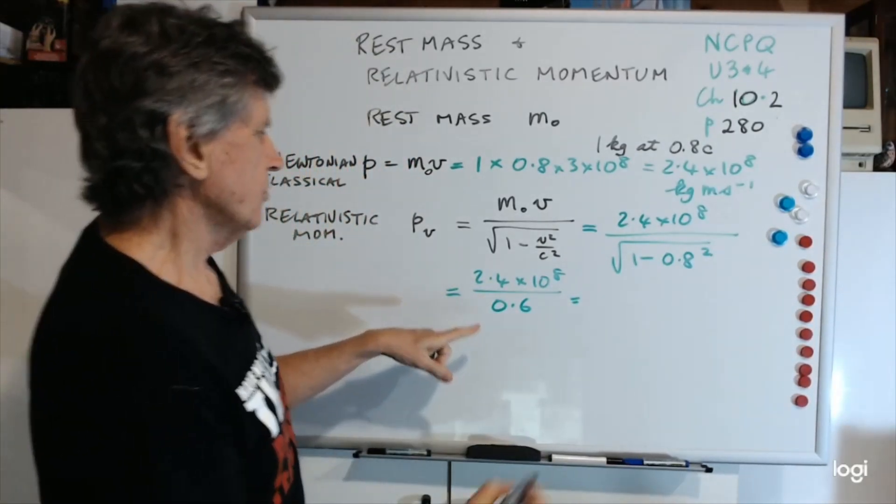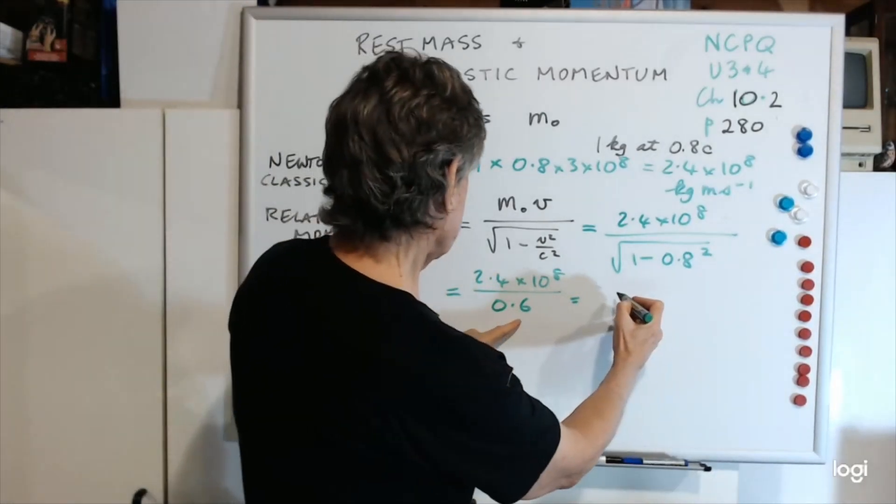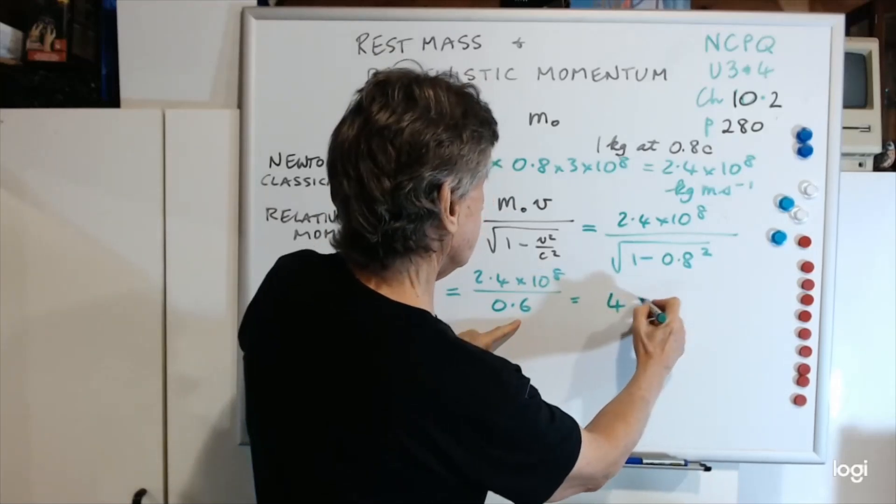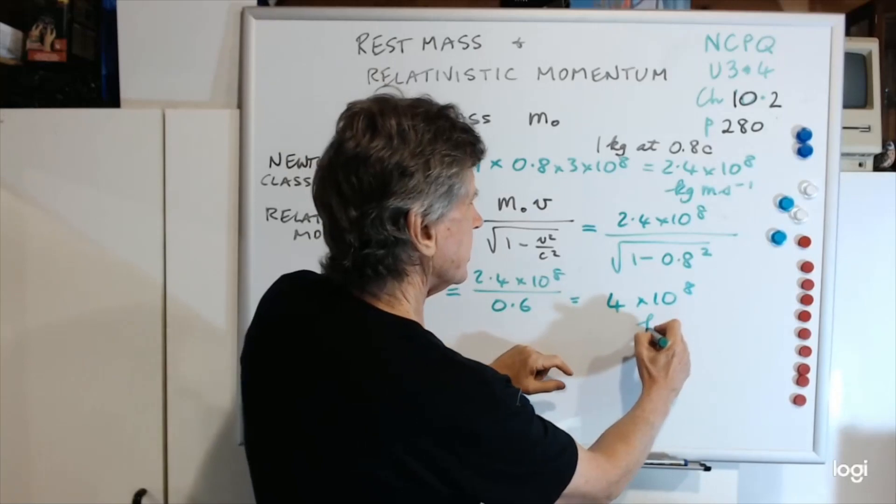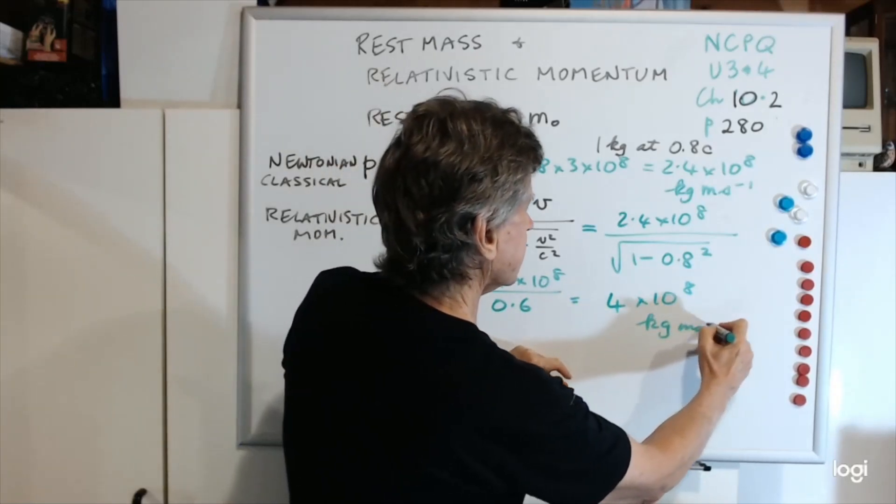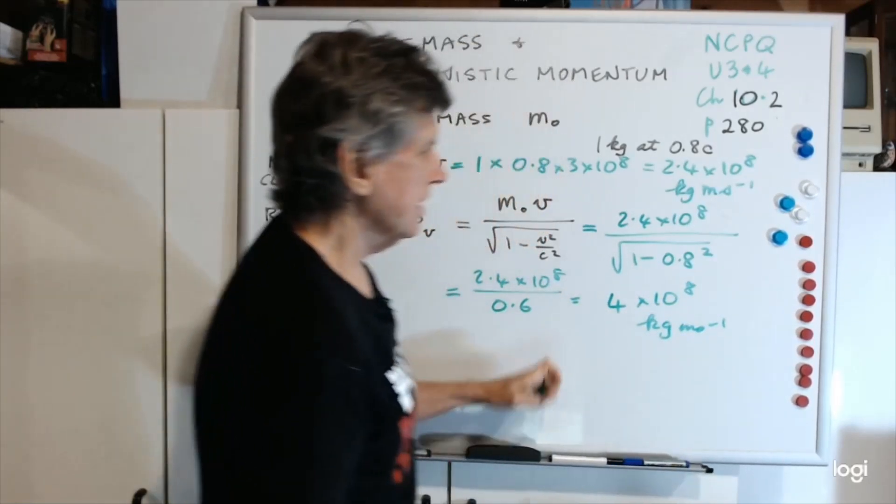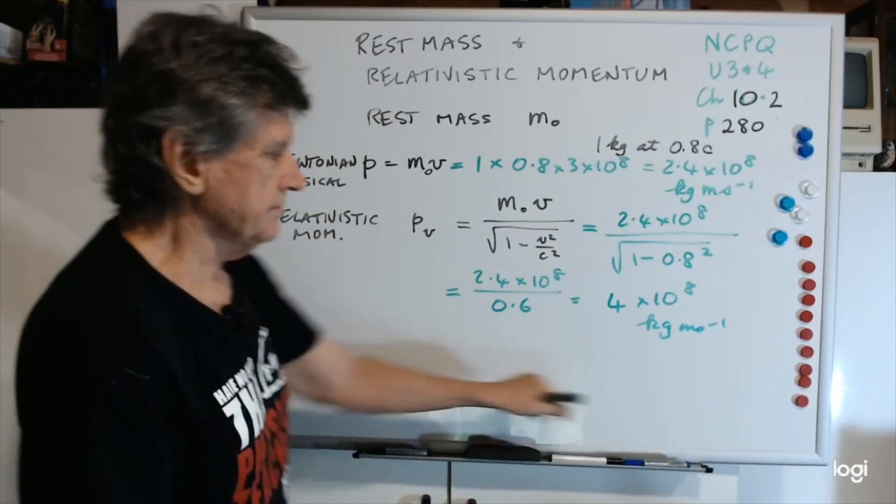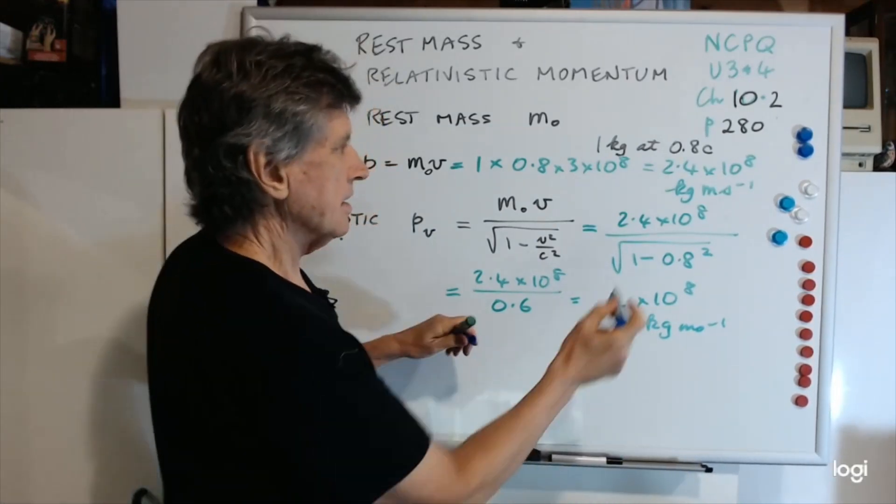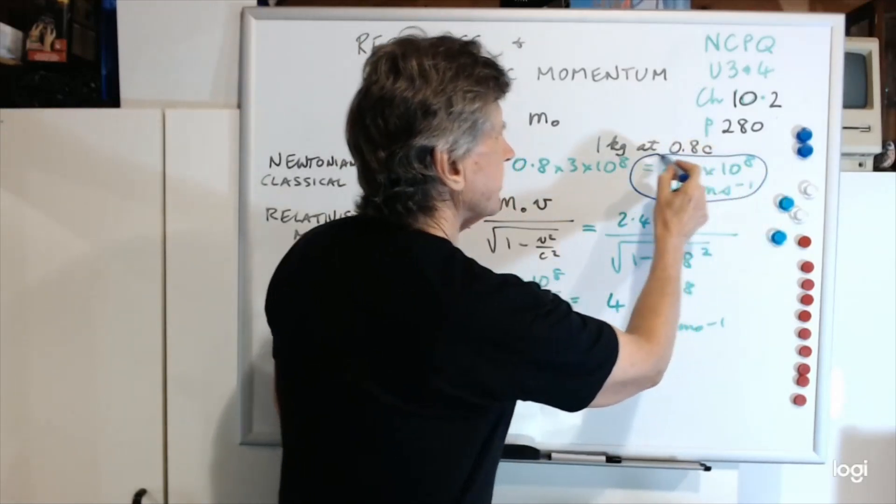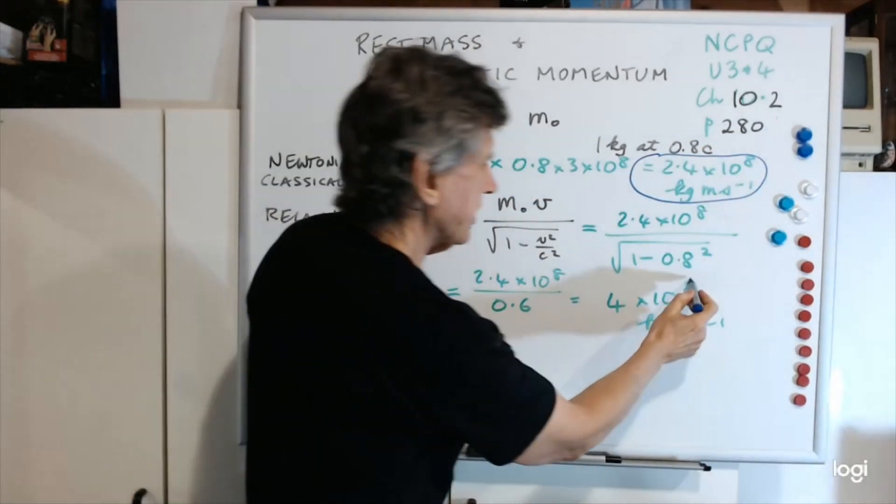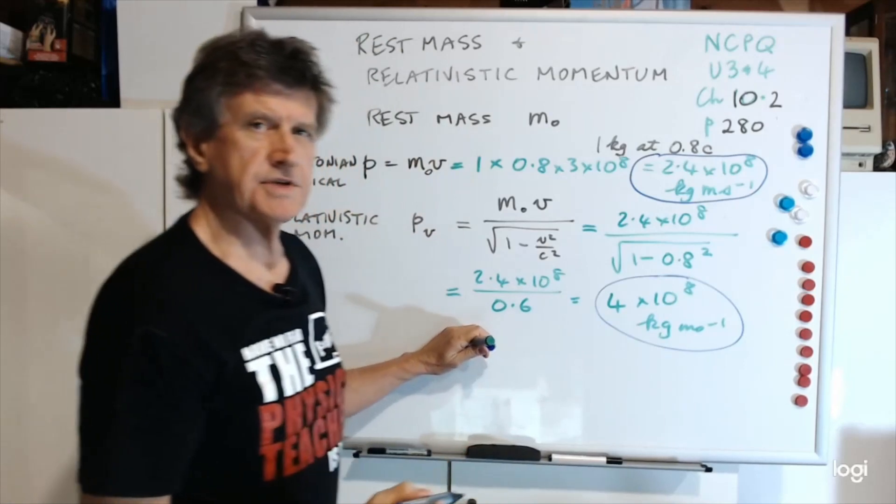If you work that out, that comes to 4 by 10 to the 8, same units, kilograms meter second to the negative 1. So what we've got are the Newtonian momentum there and the relativistic momentum there.